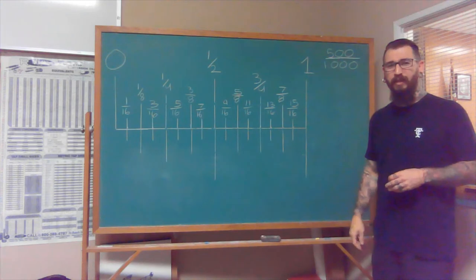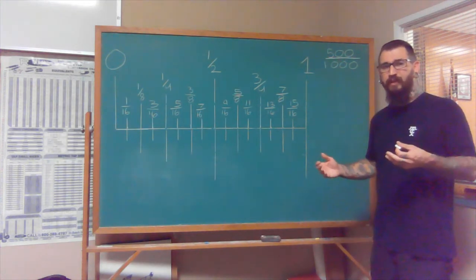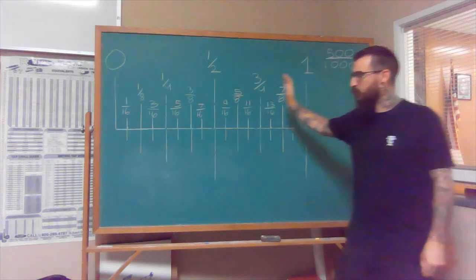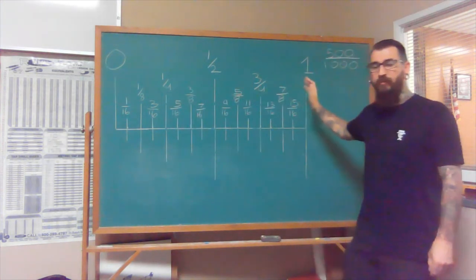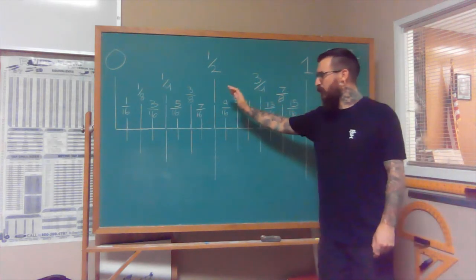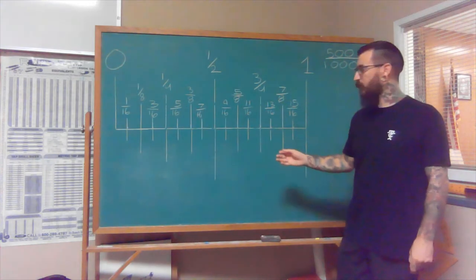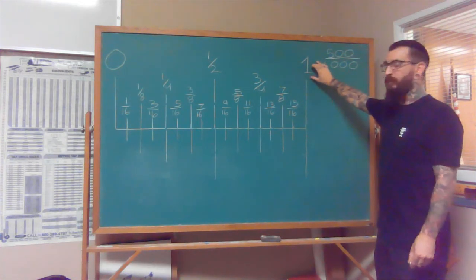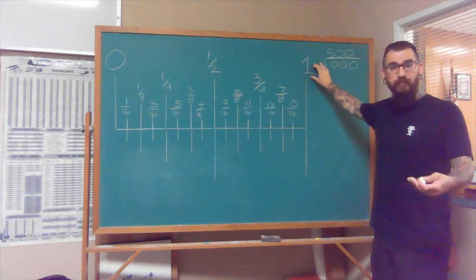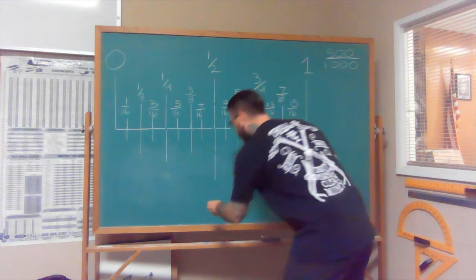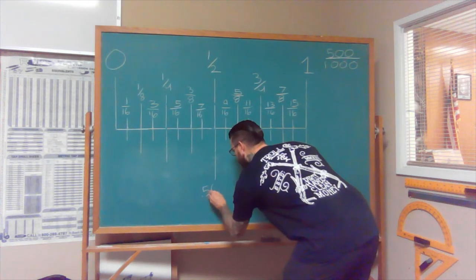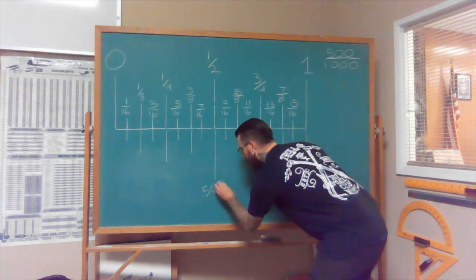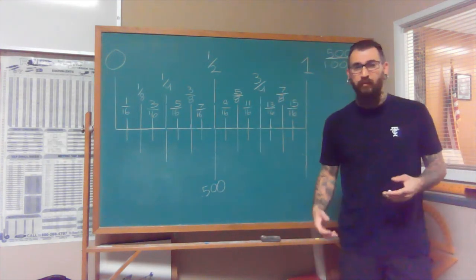One way I like to really think of this, I think it's an easy transition, is in terms that we all like: money. If we looked at this as one whole dollar and all of this was the cents or the change that made up a full dollar, it makes it a lot easier. So if you have half a dollar, you would have 50 cents. So our half inch is the equivalent to 0.50 or if we're working in place numbers of thousandths, it's going to be 0.500.